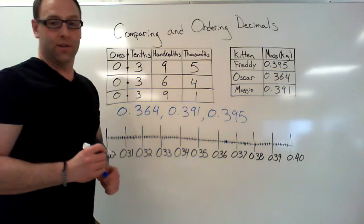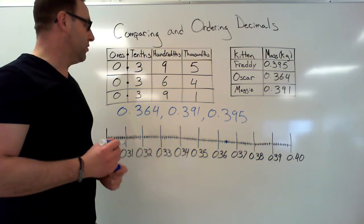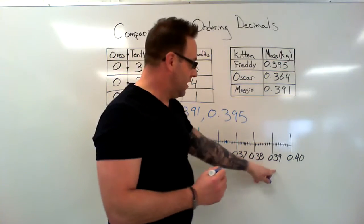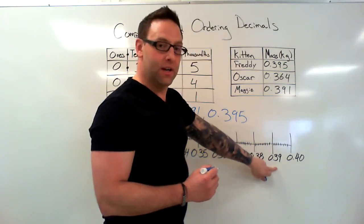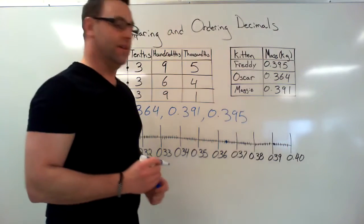Okay, now let's go up to zero point three nine one. Find it on the number line. Zero point three nine is right here. Zero point three nine one is right there.